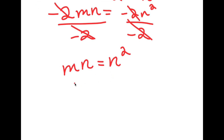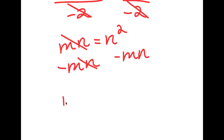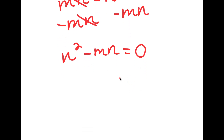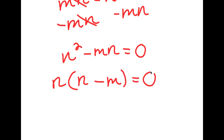From here, I'm going to subtract mn on both sides. So then these two cancel out, and I get n squared minus mn is equal to 0. Now the greatest common factor in n squared minus mn is n. So if I factor out n, I get n times n minus m is equal to 0.